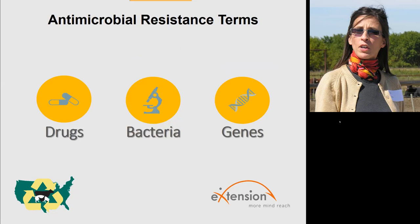AMR genes can be shared. I'll say, I love your mother's banana bread — can you get me the recipe? And you share it, and now we both have that. It's a very similar dynamic with these recipes for resistance that can be shared between bacteria.